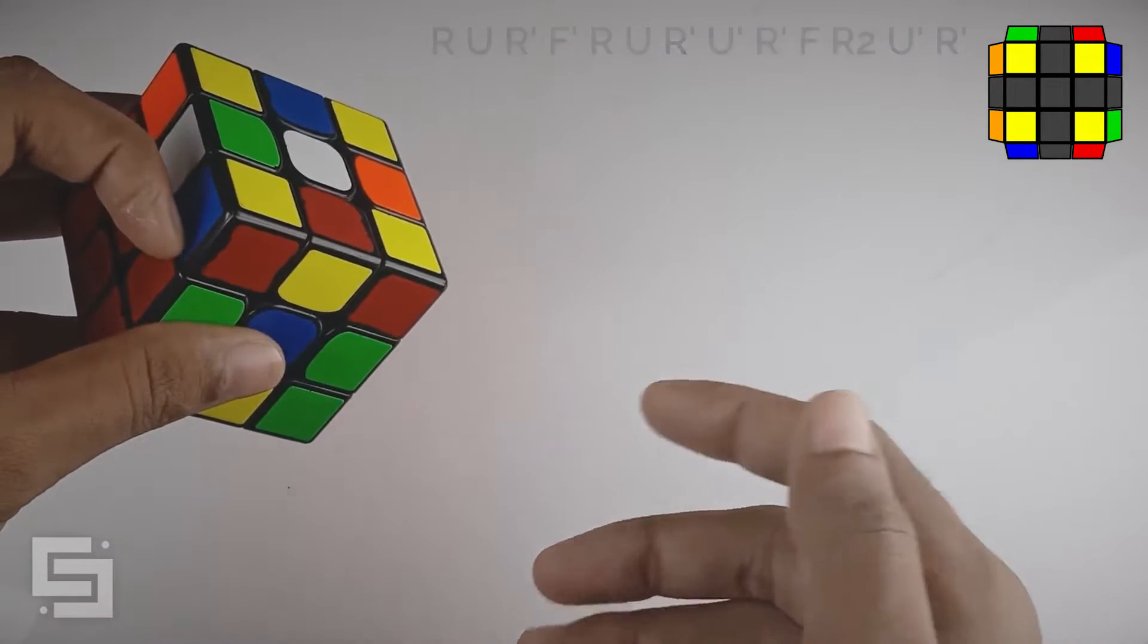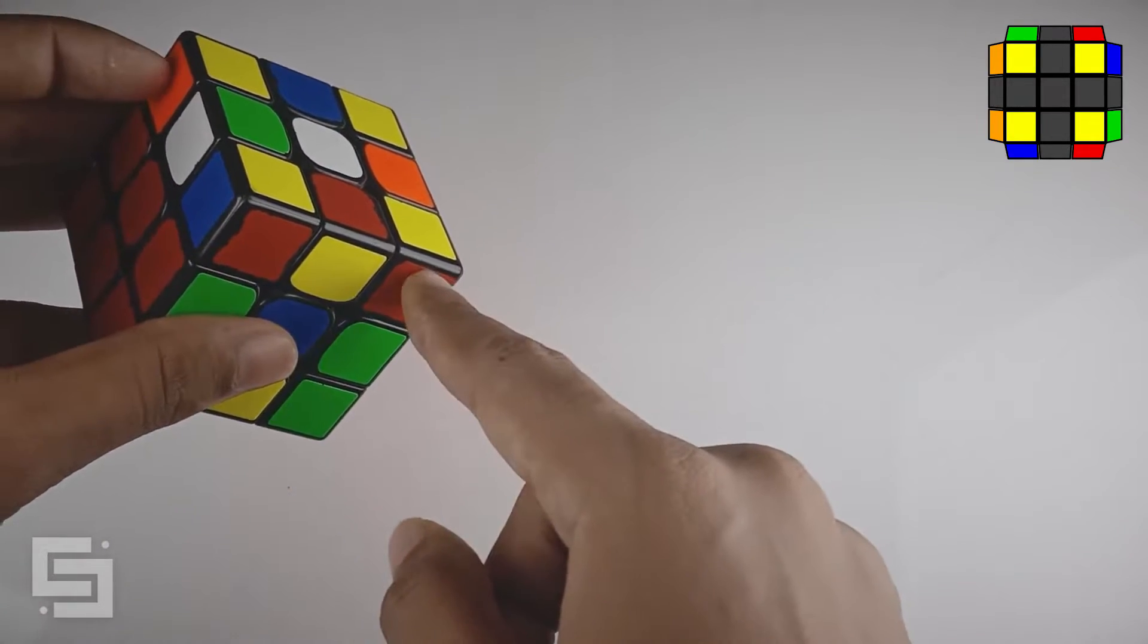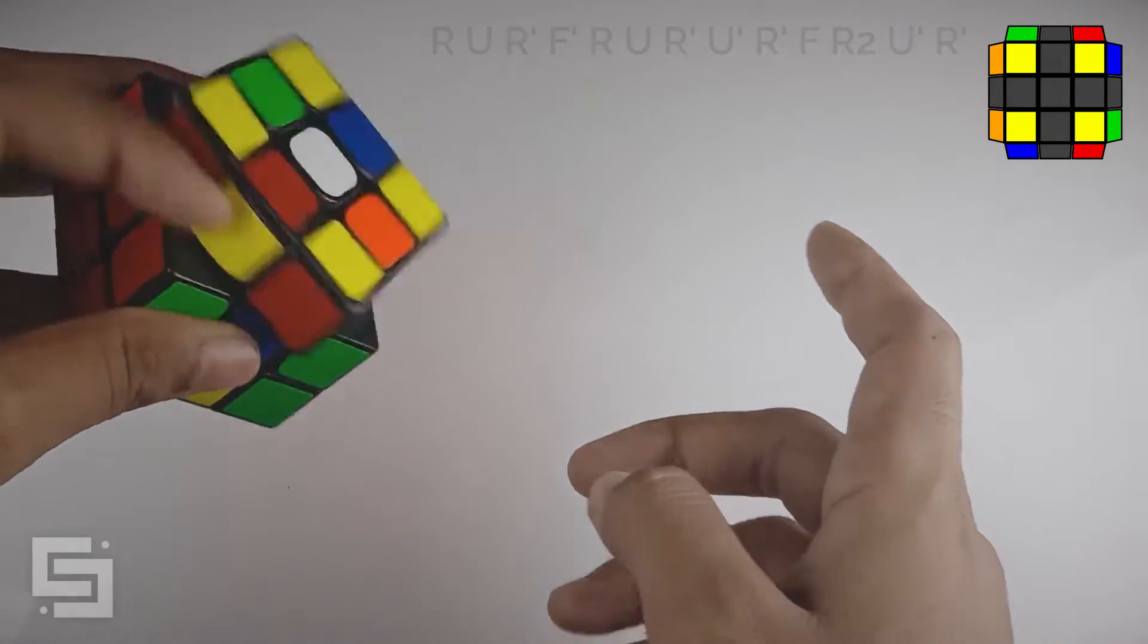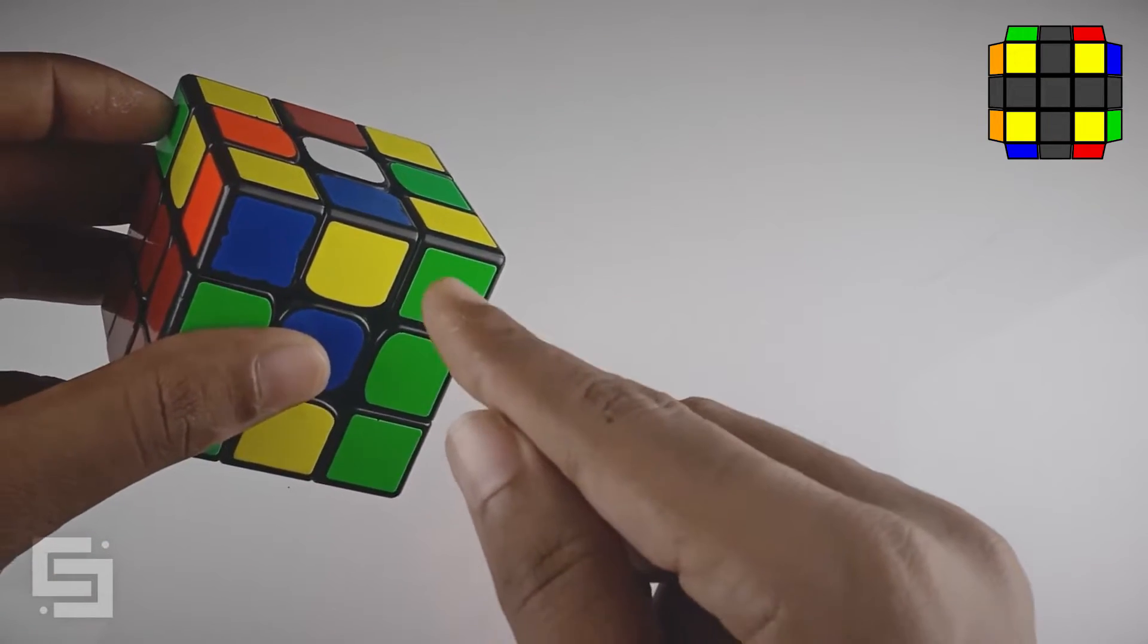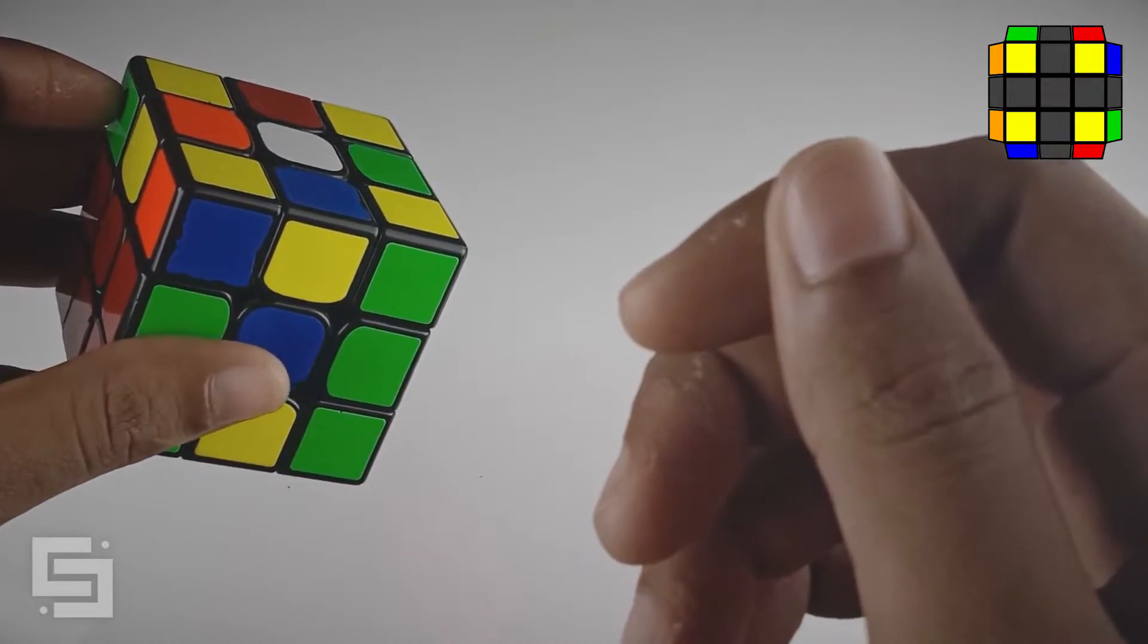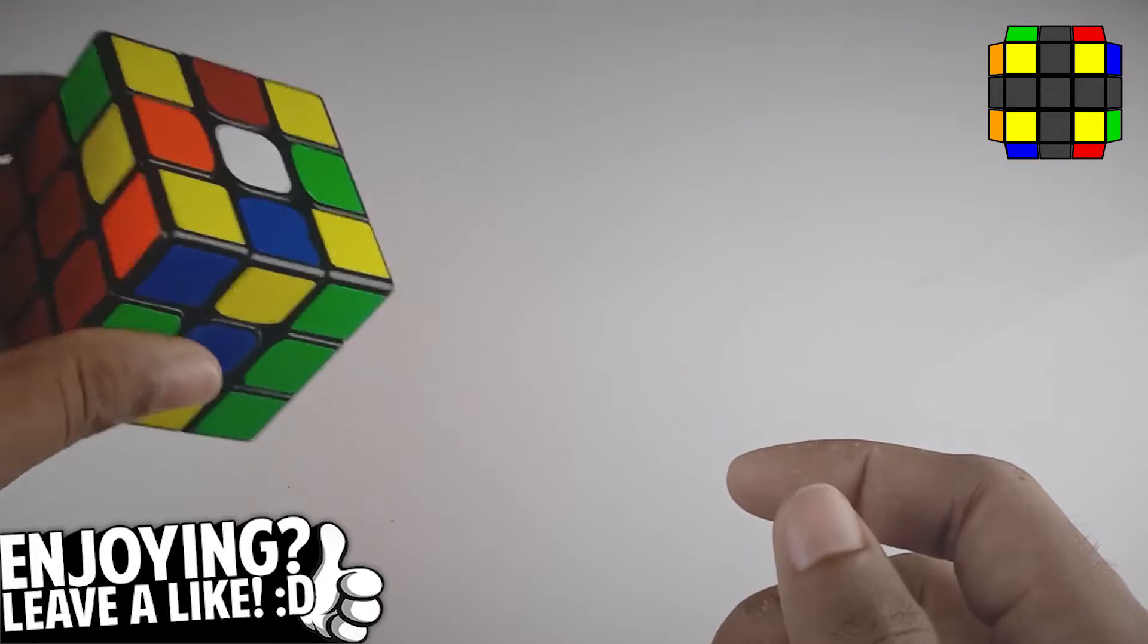But if you had the case like this, so you have adjacents in here and these two don't match, then you have to AUF with a U move and then do your algorithm. Therefore, when the stickers are adjacent to each other, we use this third sticker to determine which side we have to AUF with a U' or a U move.